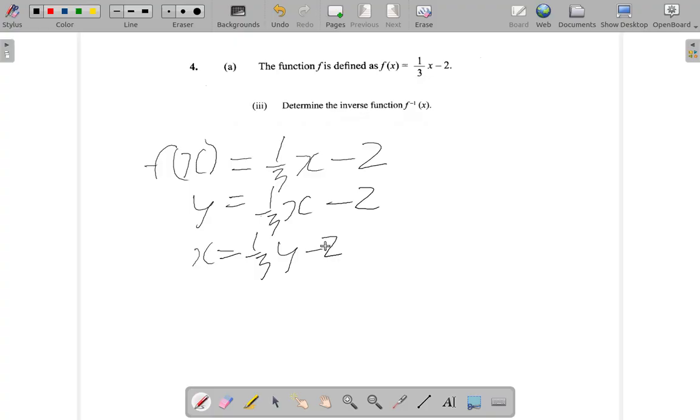So that you get rid of this 2. Negative 2 plus itself is 0, so this will go. So what you have happening now: 1 third y minus 2 plus 2.